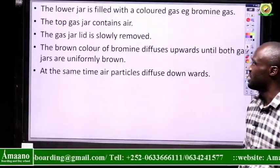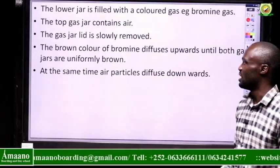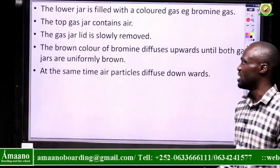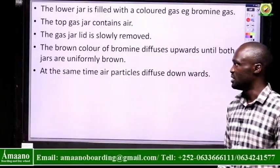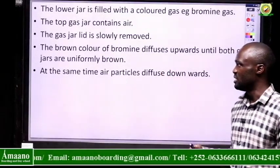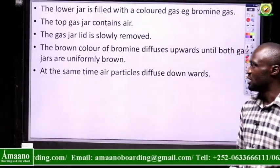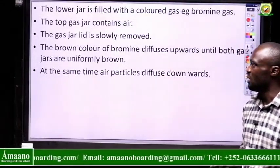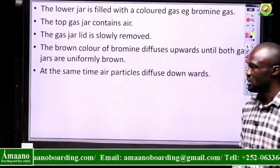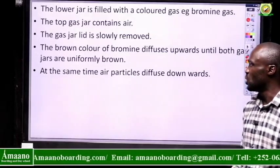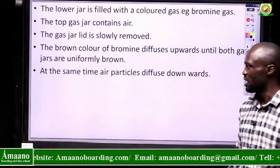Here are the steps: fill the lower gas jar with bromine gas, leave the top jar empty, and separate them with a lid. When you remove the lid, the gas molecules will diffuse from the lower jar to the upper jar until both have an equal number of molecules and the same color.